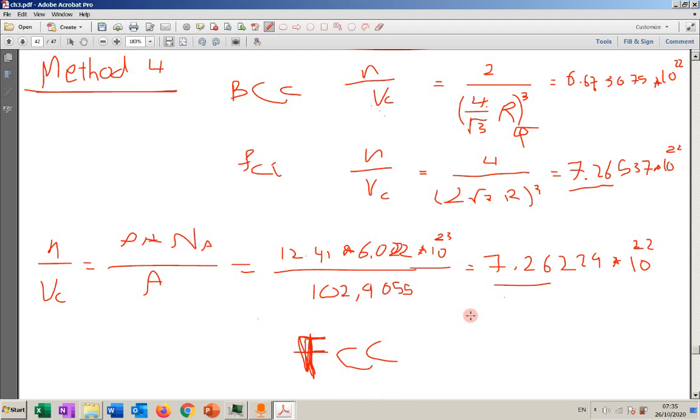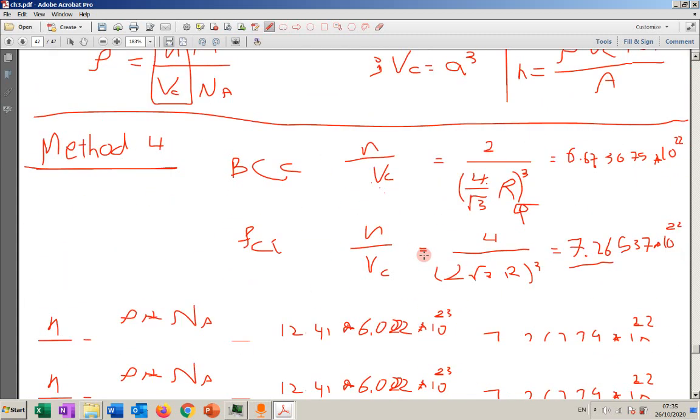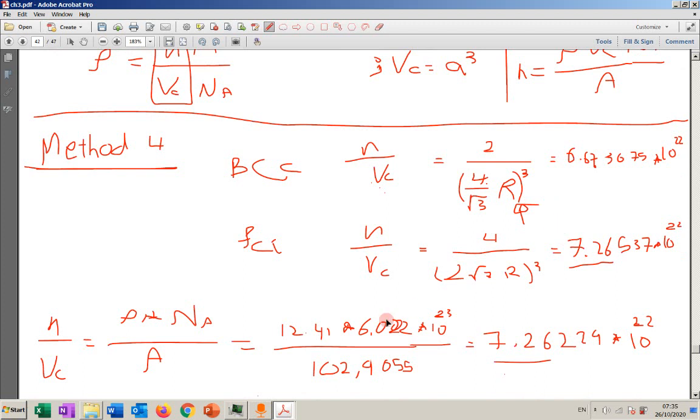Then you will find n over Vc for your case and it will be close to one of the ones that you have, and you directly see FCC. But imagine that you have four crystal structures and you want to do it. What assumption? You have to run all of them, the four assumptions. But here, it's preferable for that case. You will just find n over Vc for the four of them, and then you will run one time. And n over Vc for your case will be close to one of the cases that you have, and you directly find the crystal structure.